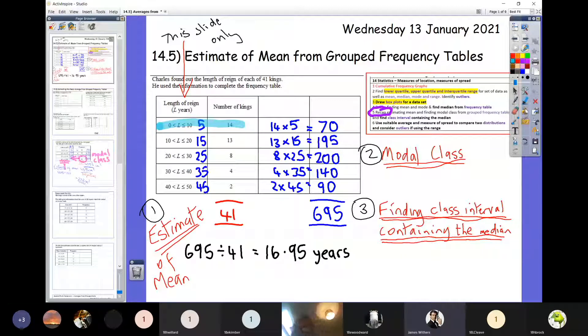So the best we can do is to make an estimate. That's the only extra step to today's lesson. That column what I'm just about to highlight in orange, that is the midpoint of the length of reign. It's halfway along, so halfway between 0 and 10 is 5, halfway between 10 and 20 is 15, and so on. That's the only additional step. We are estimating that those 14 kings reigned for exactly 5 years, and in the next row we're estimating that those 13 kings reigned for exactly 15 years.